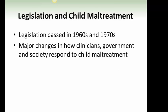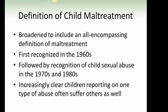Legislation and child maltreatment: legislation passed in the 1960s and 1970s brought major changes in how clinicians, government, and society respond to child maltreatment. The definition of child maltreatment was broadened to include an all-encompassing definition, first recognized in the 1960s, followed by recognition of child sexual abuse in the 1970s and 1980s. It has become increasingly clear that children reporting one type of abuse often suffer others as well.